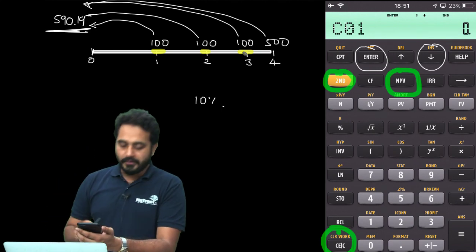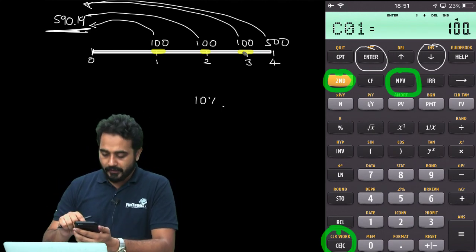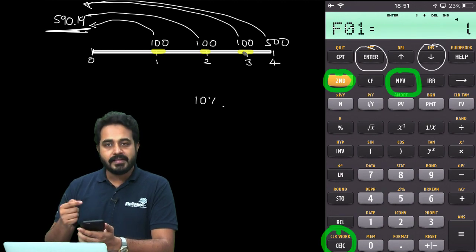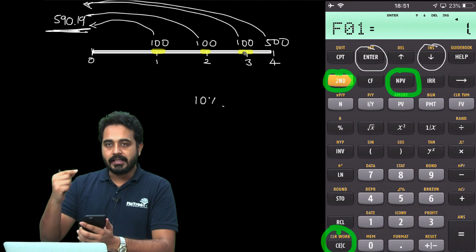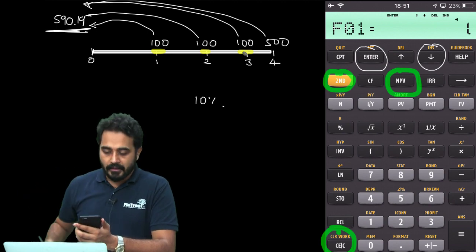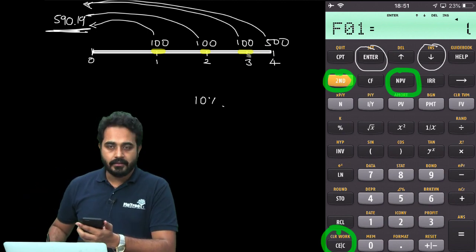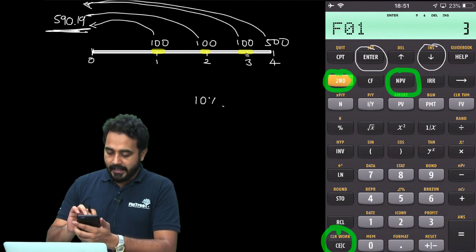Then nothing in cash flow 0. Downward arrow, cash flow 1. That is 100, enter. Then downward arrow, frequency 1. So, it is asking me how many times 100 is being repeated consecutively. So, 100, 100, 100 is being repeated 3 times. So, I am going to say 3, enter.